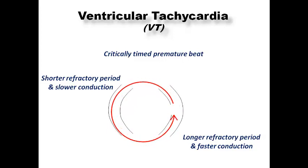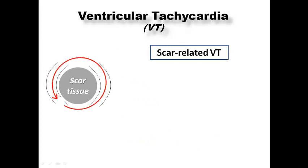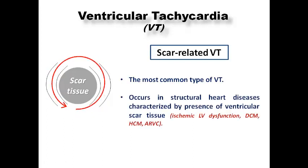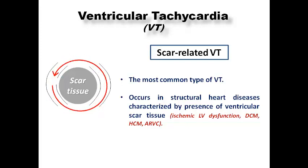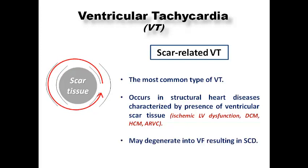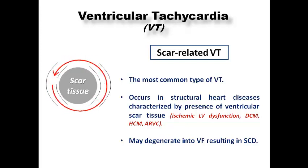The most common example of re-entrant VT is scar-related VT, which occurs in structural heart disease rather than in acute MI. It is characterized by ventricular scar tissue, as seen in ischemic LV dysfunction, dilated cardiomyopathy, hypertrophic or arrhythmogenic RV cardiomyopathy. This scar provides a substrate for re-entrant VT, which may degenerate into VF resulting in sudden cardiac death. Scar-related VT is the most common presentation of VT.